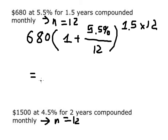We have 1.5 multiplied by 12 here and we got $738.34.